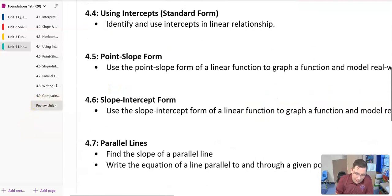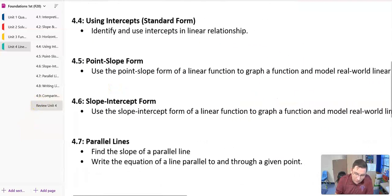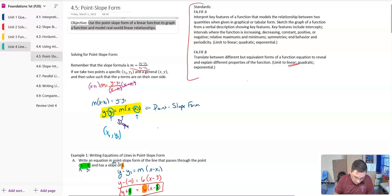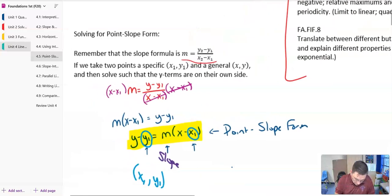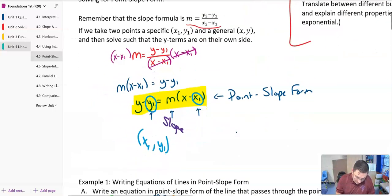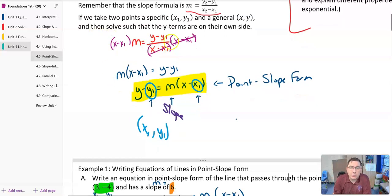In section five, we looked at point-slope form. And we want to be able to use point-slope form to graph the function and model real-world linear relationships. And remember that point-slope form is y minus y sub 1 is equal to m times x minus x sub 1. This is the one where both the y's are on the same side, both the x's are on the same side, and the m is along with the x's. And so we're able to take our slope, either given to us or that we find,